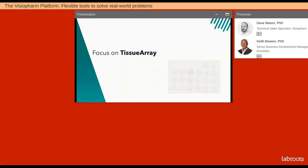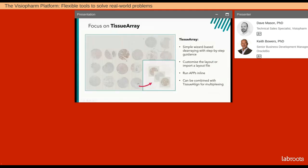I'd like to move on and talk about some of the modules available in VisioPharm. The Tissue Array module is chiefly designed to de-array TMA slides — slides that have many tens or hundreds of individual cores representing either different tissues, different patients, or different experimental types. It's a very high-density way to collect data. What the Tissue Array module can do is break up each one of these cores into individual units or images for processing.